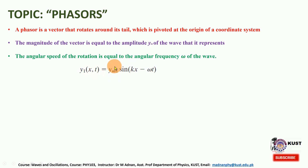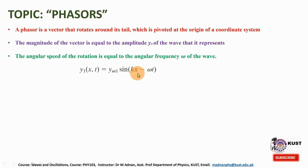The phasor having amplitude y1m represents the first wave, and this is a sinusoidal wave having wave number k and angular frequency omega.